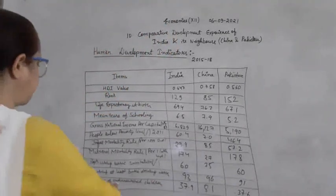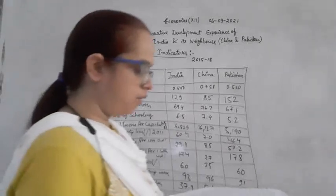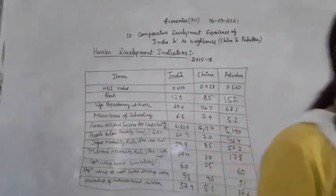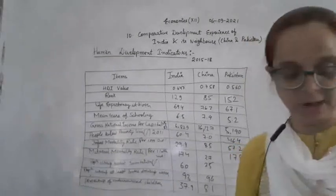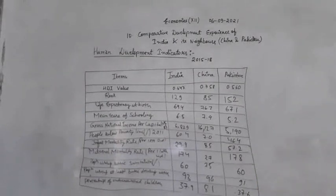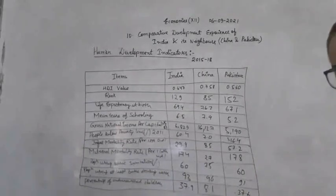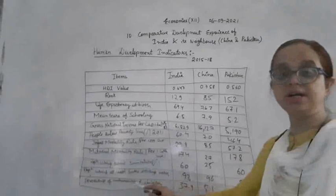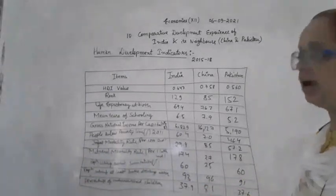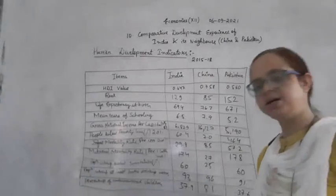The percentage of undernourished children refers to the percentage of children who are unable to consume adequate nutrition. The percentage of undernourished children in India is 37.9%, China is 8.1%, and Pakistan is 37.6%.